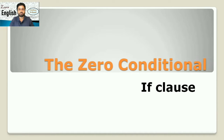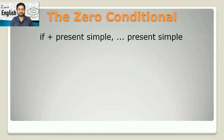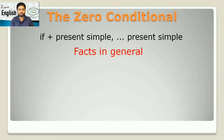The zero conditional, which is also called the if clause, uses two present simple verbs — one in the if clause and another one in the main clause. It is used to talk about facts in general.